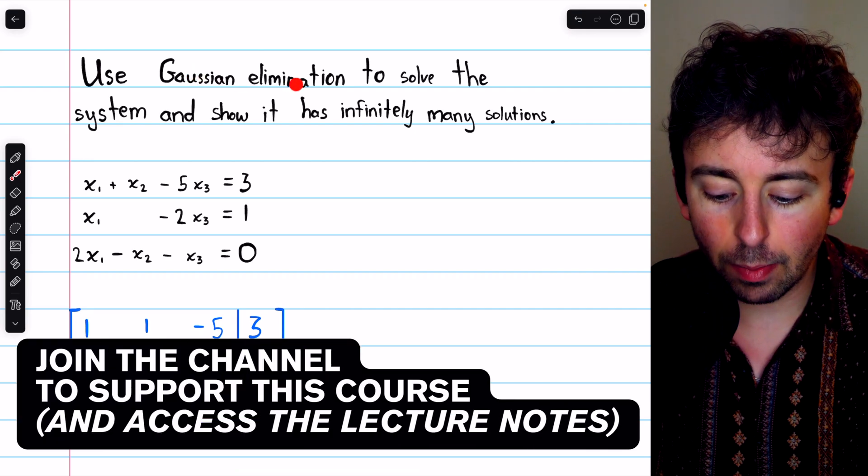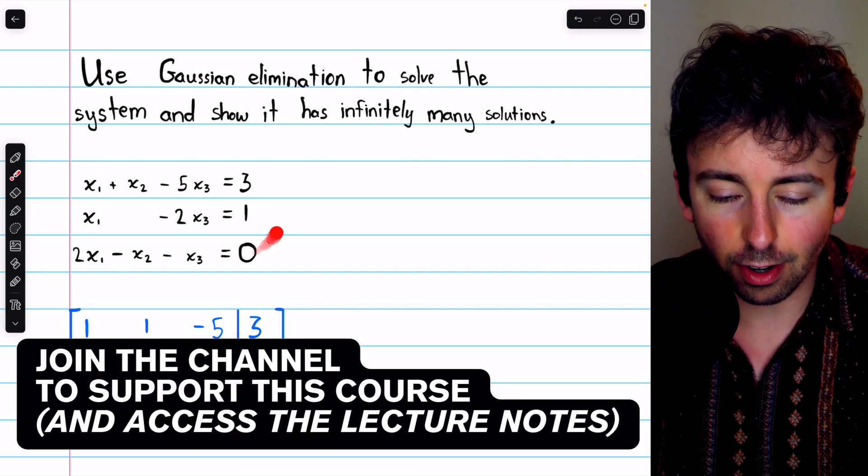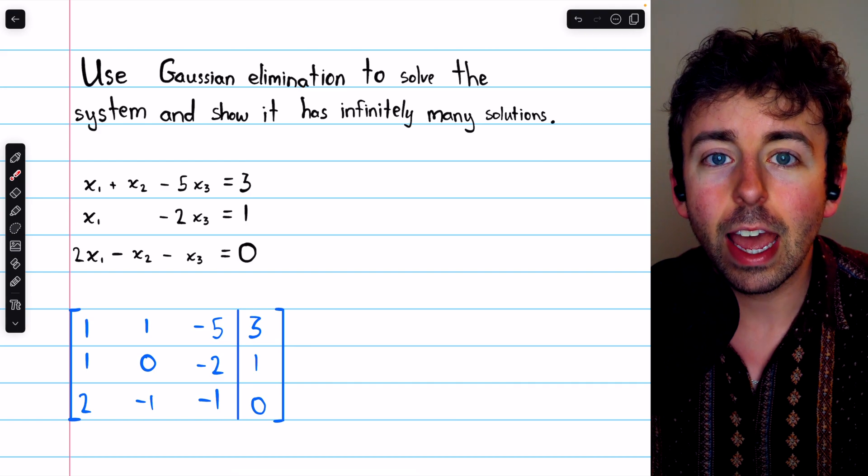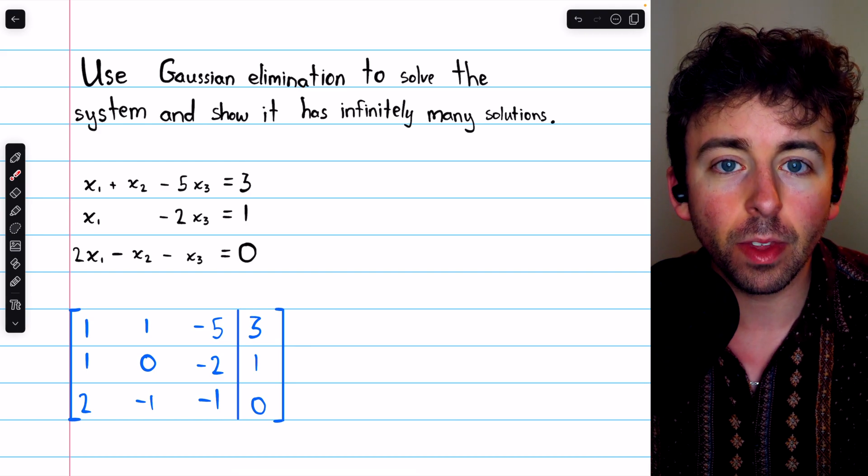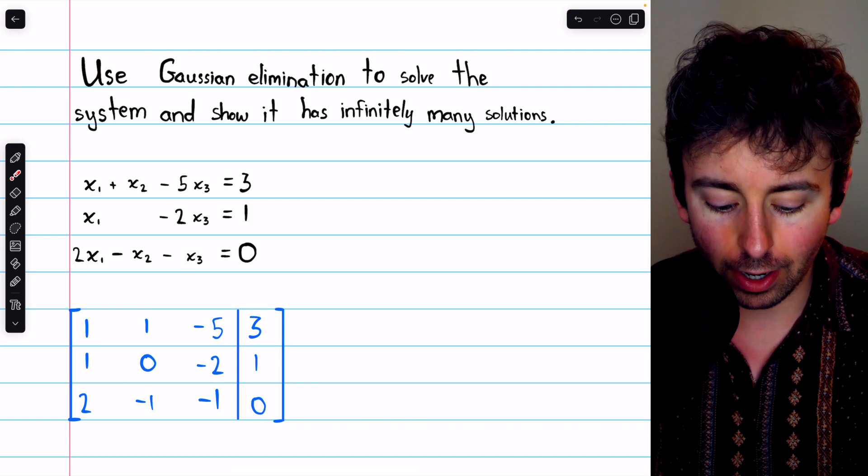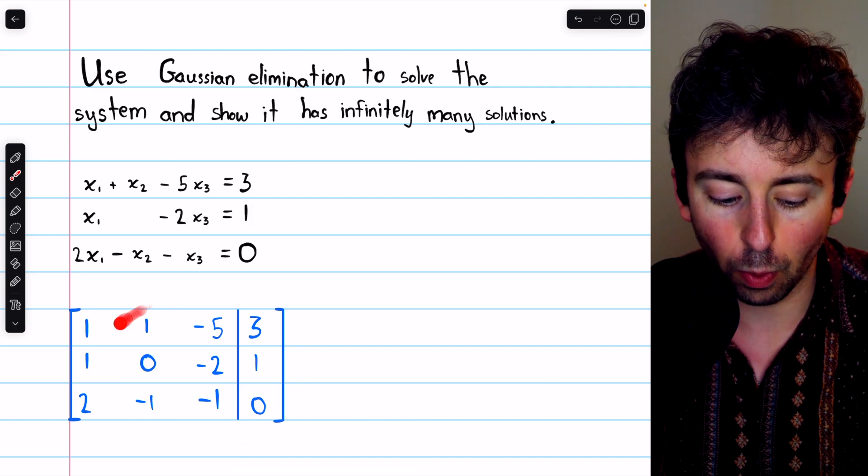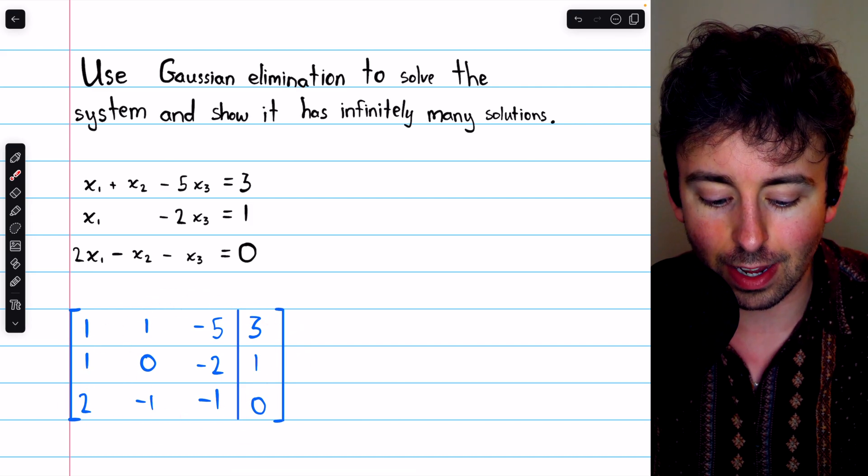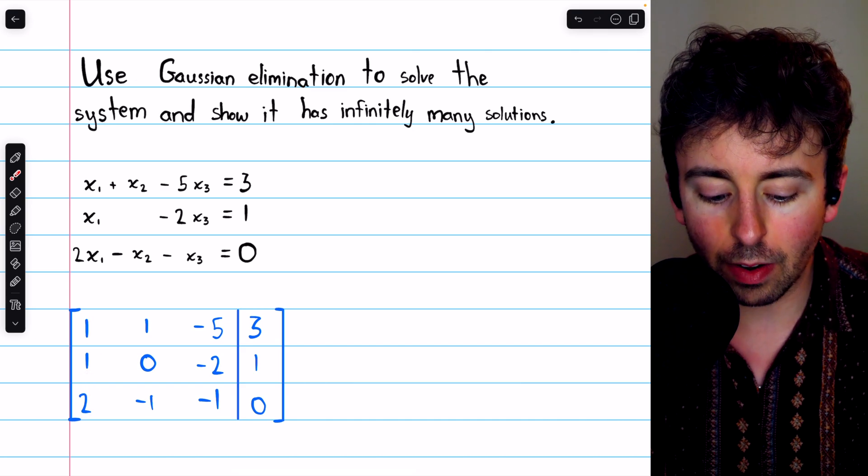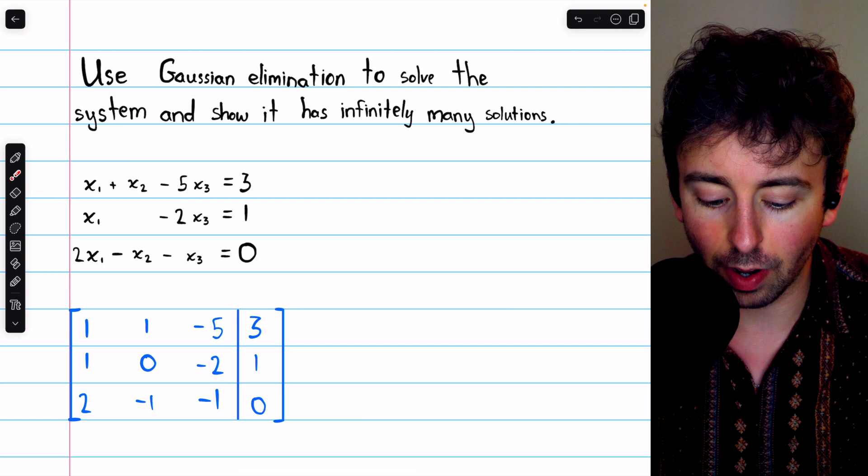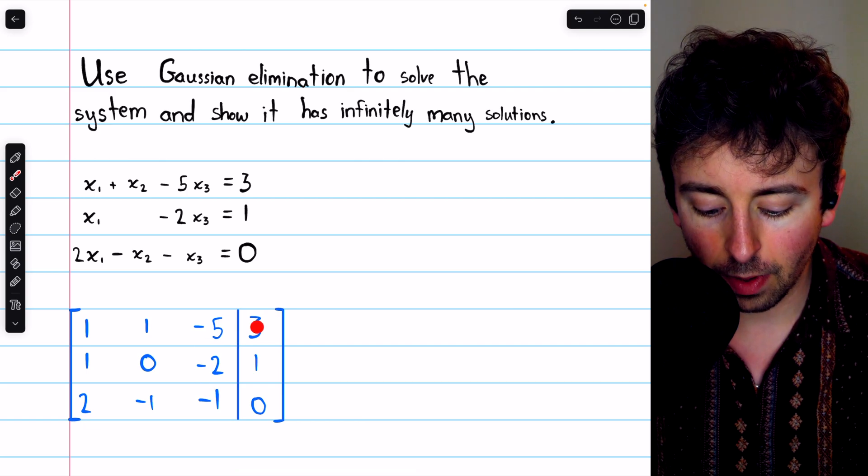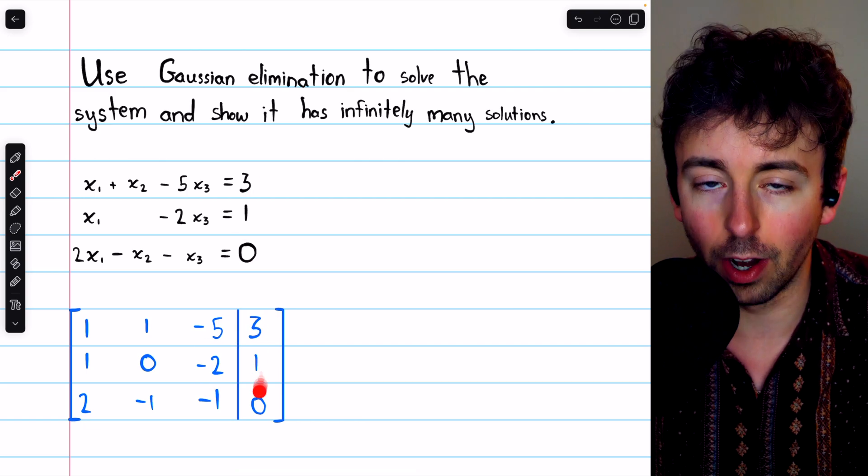We're going to use Gaussian elimination to solve this system of linear equations, and as we'll see, it has infinitely many solutions. We have to begin by writing the augmented matrix for the system, which we see here. In the first column we have the coefficients of x1, in the second column we have the coefficients of x2, and so on, and we have the constants on the right.